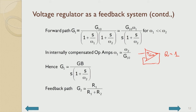Hence G1 = GB/S, where GB = G10·ω1 is the gain-bandwidth product. This means the op-amp behaves almost like an integrator. With the second pole effect taken into account, this is the loop gain of the unity-gain system designed using the op-amp.